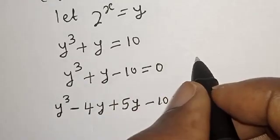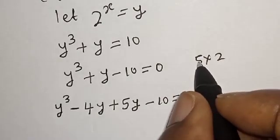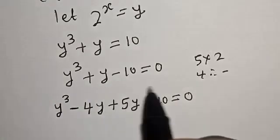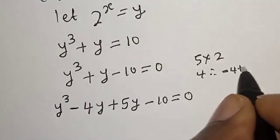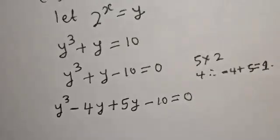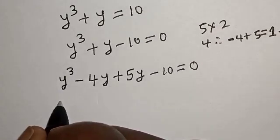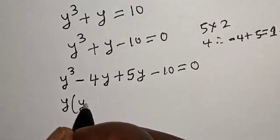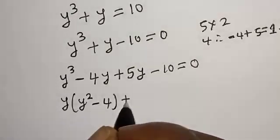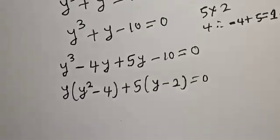Because here, 10 is 5 times 2. The largest value here is 5, and what comes before 5 is 4. In order to get the coefficient of y, which is 1, we have minus 4 plus 5, which is equal to 1.